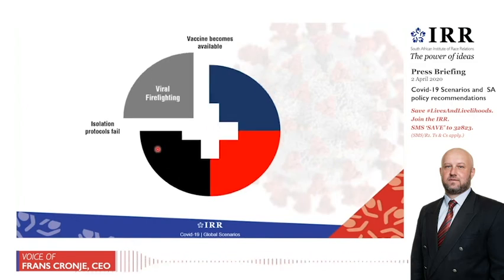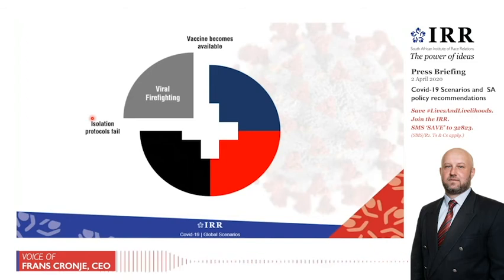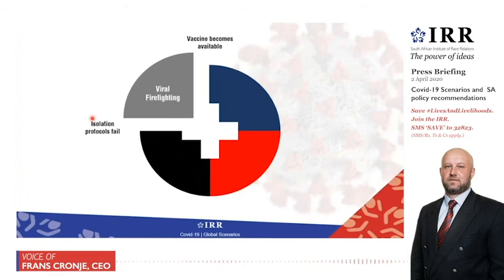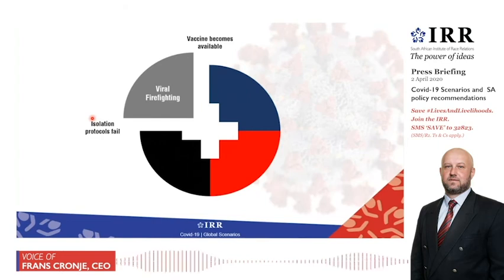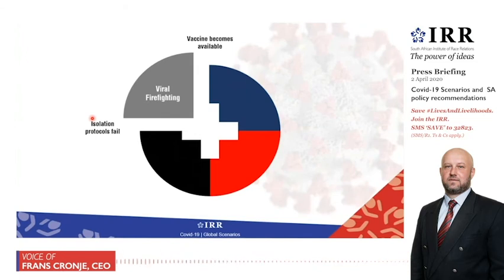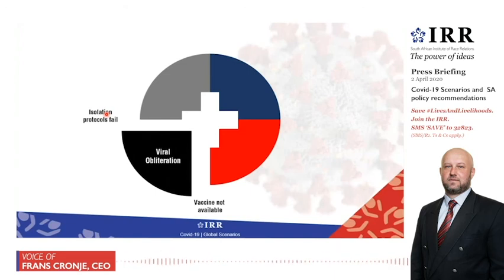The third scenario is what we call Viral Firefighting. Isolation protocols in South Africa will progressively begin to fail — not the complete collapse that we speak of in the Viral Obliteration scenario in the bottom left, but a progressive failure. The manner in which isolation protocols fail in Viral Firefighting is not a blanket national failure — it's more sectoral or regional. The failures are limited to specific sites and sectors.